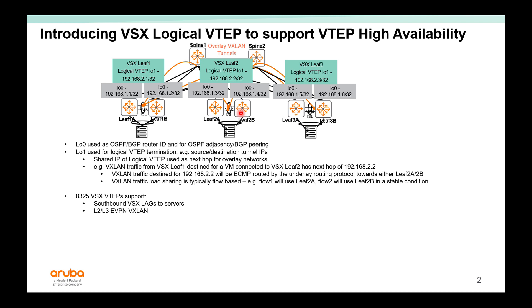In the data center, we recommend the A325 as the VSX VTAPs. These would support southbound VSX LAGs to the servers to dual home, and of course it supports both layer 2 and layer 3 EVPN and VXLAN. This VSX Logical VTAP will only work with VXLAN EVPN initially.